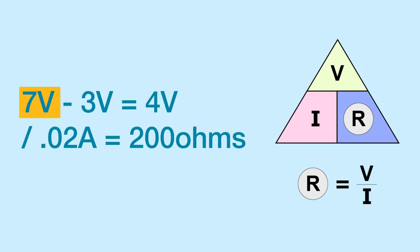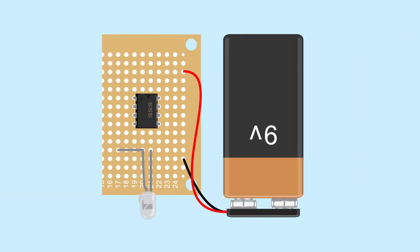7-volt output, 3-volt LED, 20 milliamps equals 200 ohms. So I'll use the closest common value I have, a 220-ohm resistor.